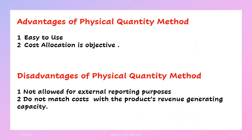The advantage of using the physical unit or quantity method is that it's very easy to use and the cost allocation is objective — meaning impartial. You're not looking at the value of the goods produced at the split-off point; you're simply allocating cost depending upon the quantity of goods produced.